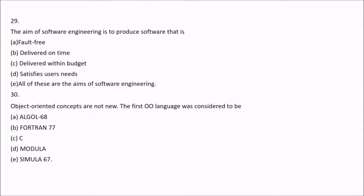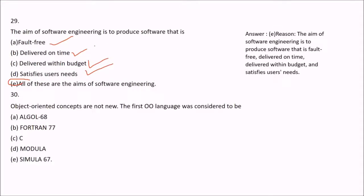Question 29: The aim of software engineering is to produce software that is fault free, delivered on time, delivered within budget, and satisfies user needs and requirement specifications. All of these are the aims of software engineering, so the answer is E — all of the above.